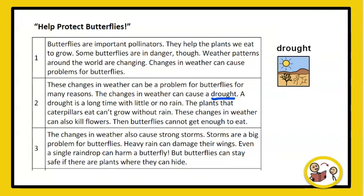Help Protect Butterflies. Butterflies are important pollinators. They help the plants we eat to grow. Some butterflies are in danger, though. Weather patterns around the world are changing. Changes in weather can cause problems for butterflies. These changes in weather can be a problem for butterflies for many reasons. The changes in weather can cause a drought. A drought is a long time with little or no rain.